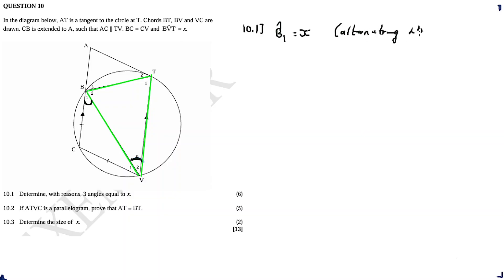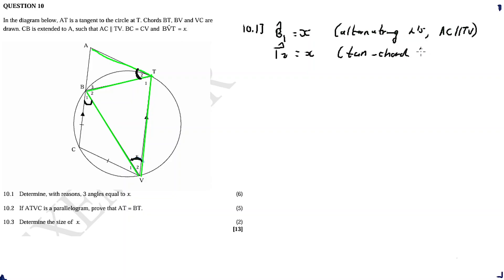They are alternating angles because AC is parallel to TV. Always reference the parallel lines when stating alternating angles — don't just write 'alternating angles' without referencing the parallel lines. So B1 is equal to x — that's the first angle equal to x. The second angle involves the tangent: T2 is equal to x because of the tangent-chord theorem.